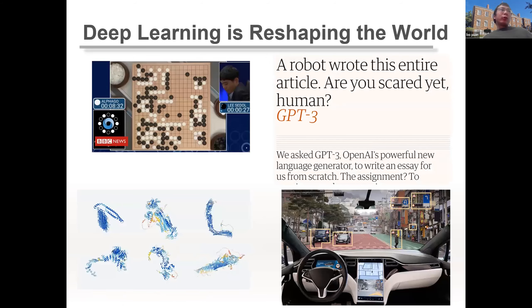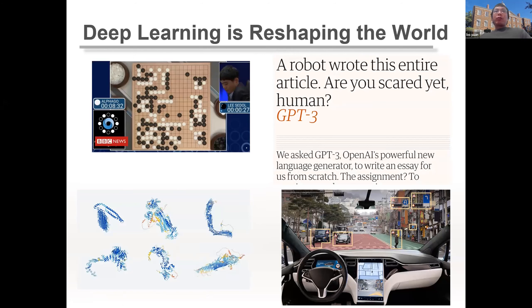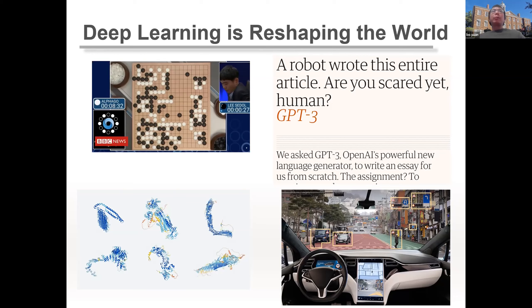Deep learning is now used in many important applications, such as autonomous driving. Recently, Google and DeepMind used deep learning to predict the 4D structure of proteins, OpenAI and Microsoft invented GPT-3 as a very powerful natural language processing model, and AlphaGo has already shown a very huge social impact.